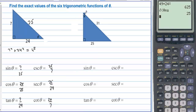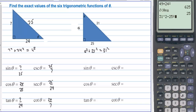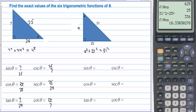On this triangle, theta is the top angle. So we need this missing leg, called A. A squared plus 25 squared is equal to 31 squared. So we take 31 squared minus 25 squared, which gives us A squared, and then we take the square root of that answer, which is a decimal. So we'll just leave it as the square root of 336. So A is equal to the square root of 336.